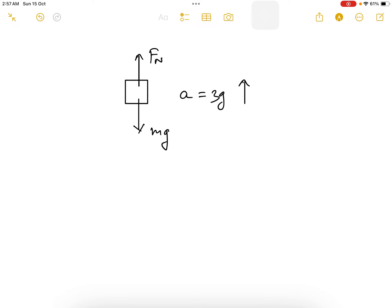We will take the upward direction as positive and write the equation of motion. Net force is normal force minus weight, and net force will be equal to mass times acceleration.